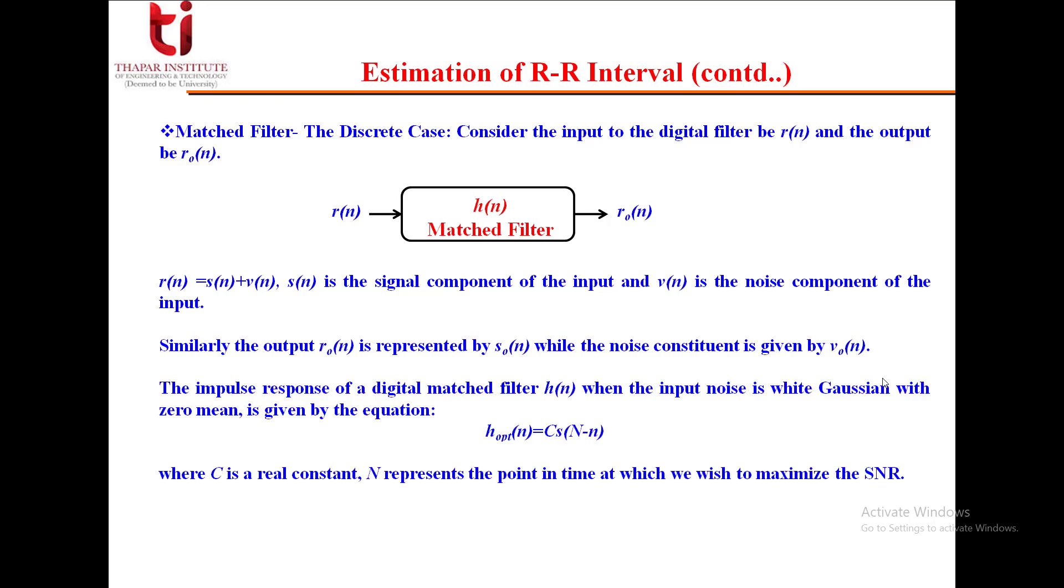As we mentioned in the analog case, in the discrete case the impulse response of a digital matched filter H(n), when the input noise is white Gaussian with zero mean, is given by H optimal (n) equals C times S(N minus n), where C is a real constant and capital N represents the point in time at which we wish to maximize the signal to noise ratio, SNR.